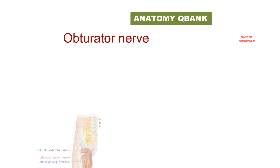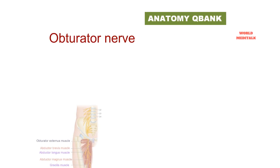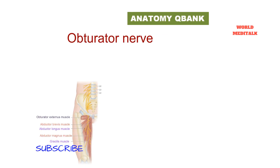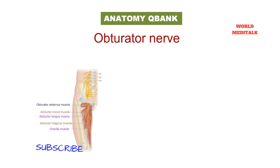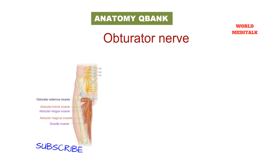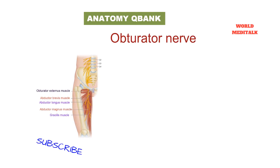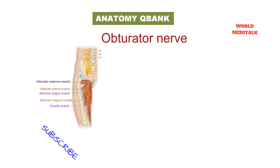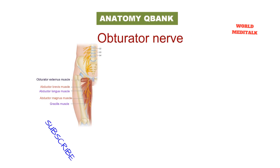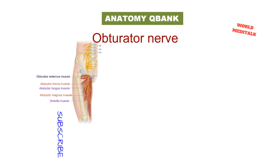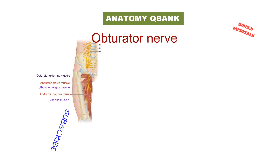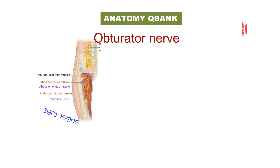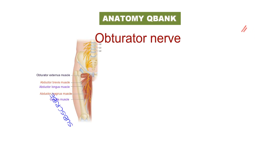The obturator nerve arises from lumbar 2, 3, and 4 by branches from the ventral division of each of these nerve roots. Lumbar 3 forms the main contribution and the second lumbar branch is occasionally absent. These branches unite in the substance of psoas major, descending vertically in its posterior part to emerge from its medial border at the lateral margin of the sacrum.